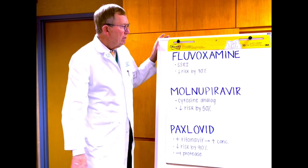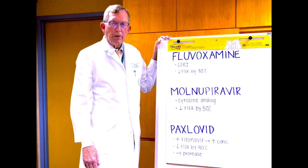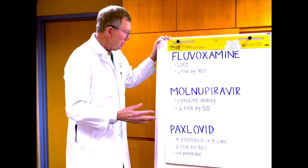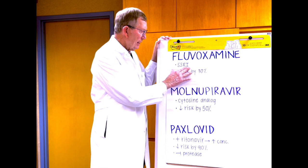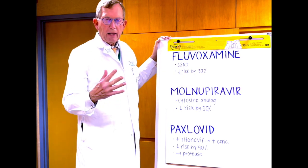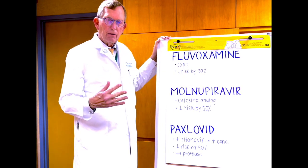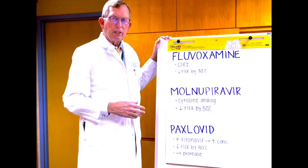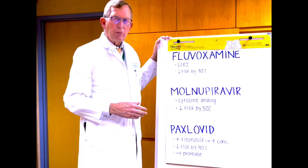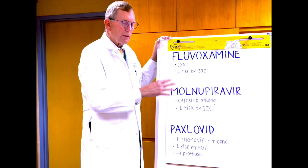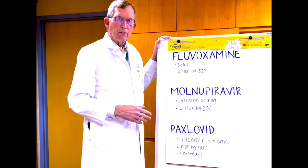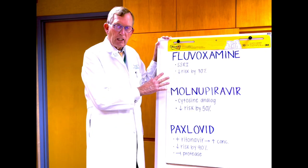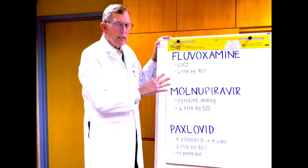The first one, fluvoxamine, an antidepressant introduced in the United States in 1994. It's an SSRI similar to Paxil, drugs of that nature. It decreases the risk of hospitalization and death by 30%. The cost is about $4 for a course of therapy. This is a very important advance, especially for developing countries.